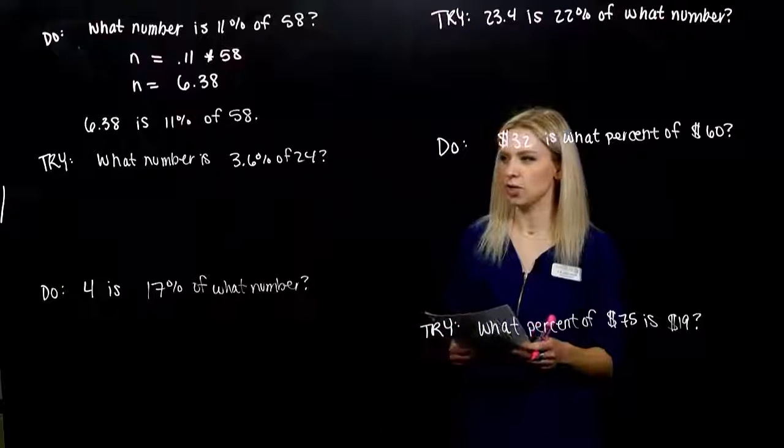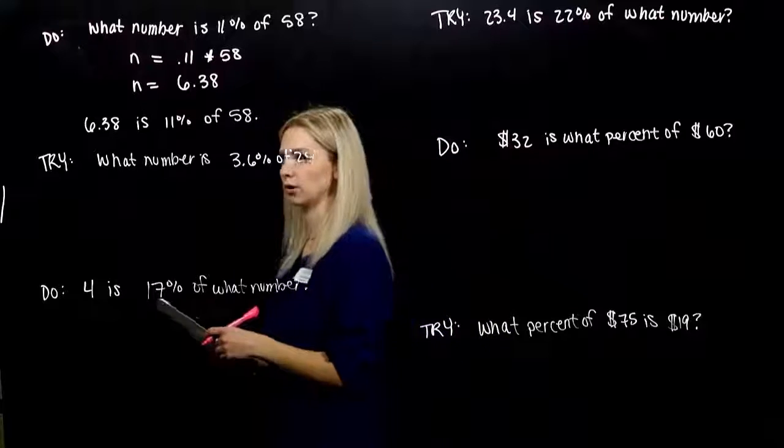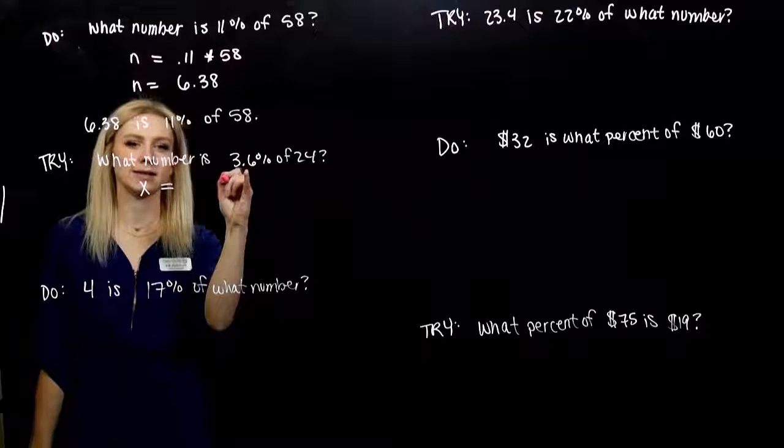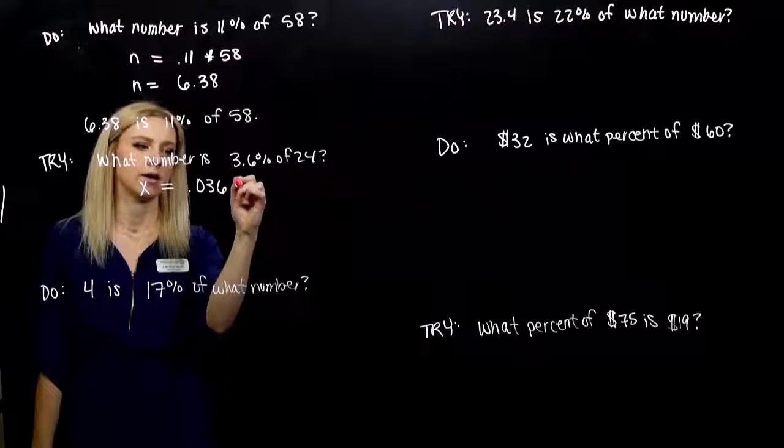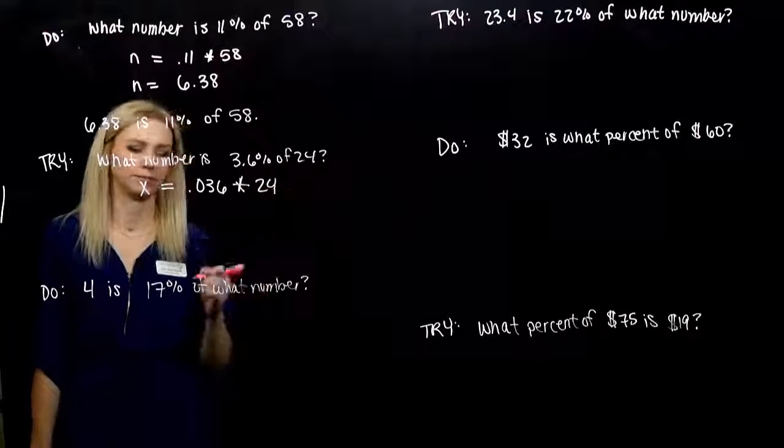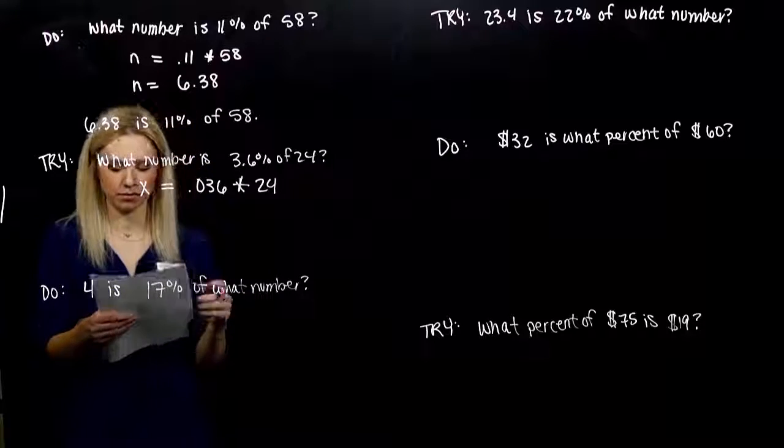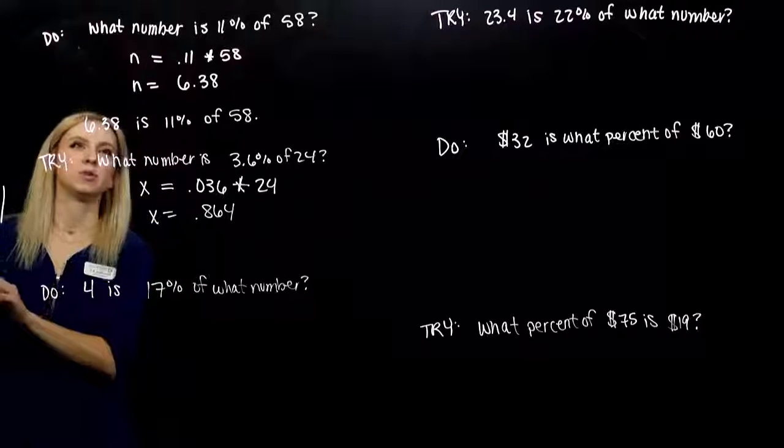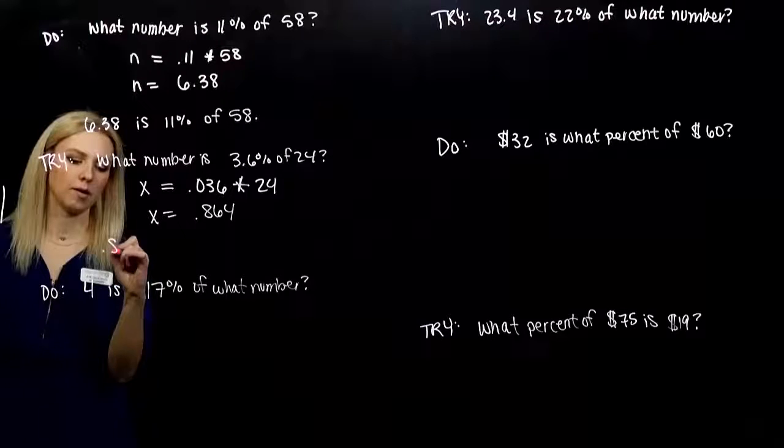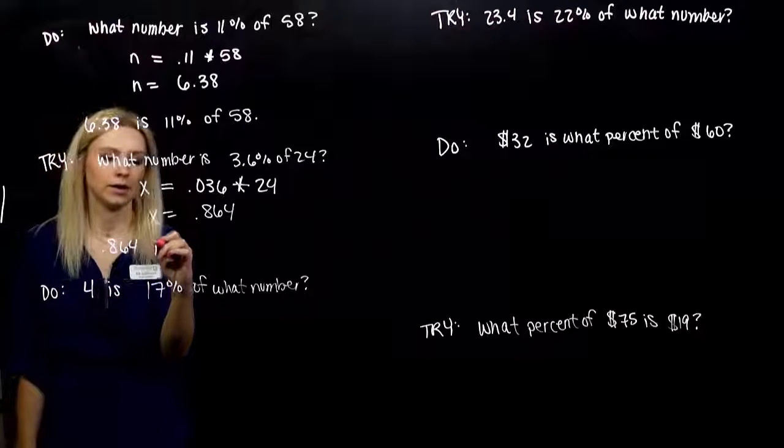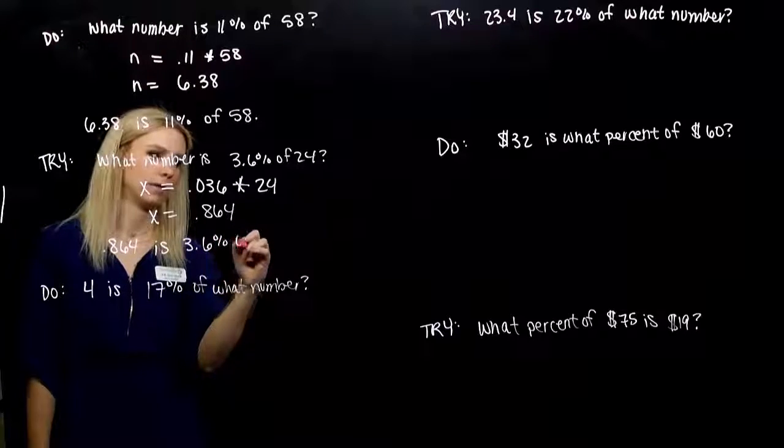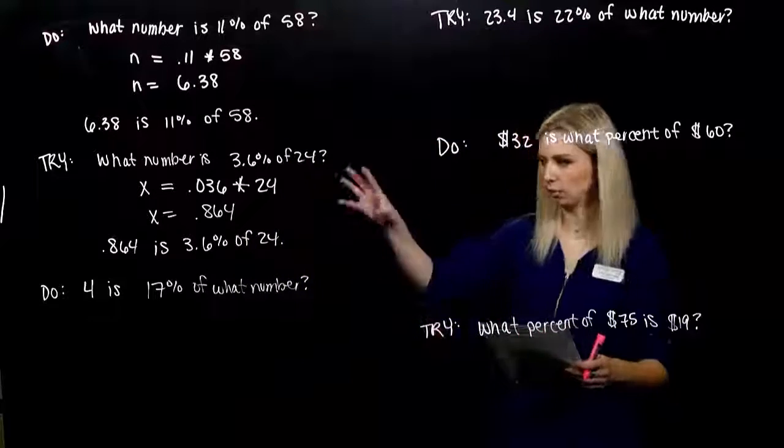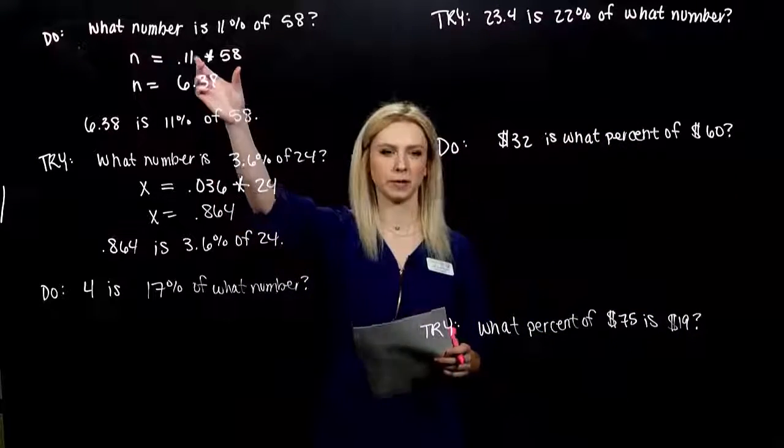Take one for you. What number is 3.6% of 24? So, again, you have to parse it down. What number. I'm going to call it X this time. Is, as a decimal, 0.036 of 24. Doing the multiplication. Doing the math. And we get out X is equal to 0.864. And, again, it's helpful to reiterate what happened. We can say 0.864 is 3.6% of 24. So, in that case, we were solving for the amount. When it was pretty straightforward, we just had to do some multiplication.